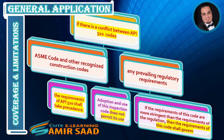Coverage and Limitations: If there is a conflict between API 510 codes and an ASME code or other recognized construction codes, the requirements of API 510 shall take precedence. If there is a conflict between API 510 codes and any prevailing regulatory requirements, adoption and use of this inspection code does not permit its use in place of regulations. If the requirements of this code are more stringent than the requirements of the regulation, then the requirements of this code shall govern.